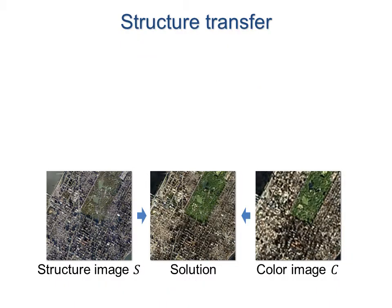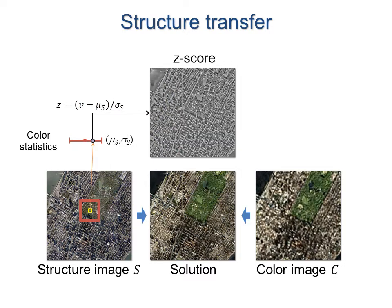Structure transfer is an interesting nonlinear operation. For each pixel in the structure image, we gather color statistics of its neighborhood and determine where the pixel's value lies within this distribution, expressed as a z-score. For the corresponding pixel in the color image, we again gather color statistics of the neighborhood, and determine the color value with the desired z-score. The resulting image combines detail from the structure image and local appearance from the color image.